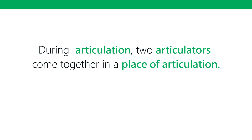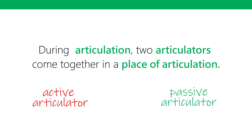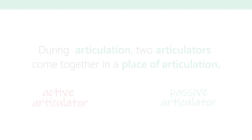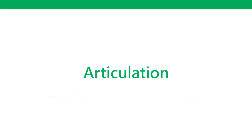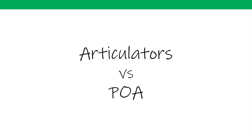In the articulation of a speech sound, two articulators come together at a place of articulation. That coming together happens in the place of articulation, where an active and a passive articulator meet. So that's the distinction between articulation, place of articulation, and articulator versus place of articulation.